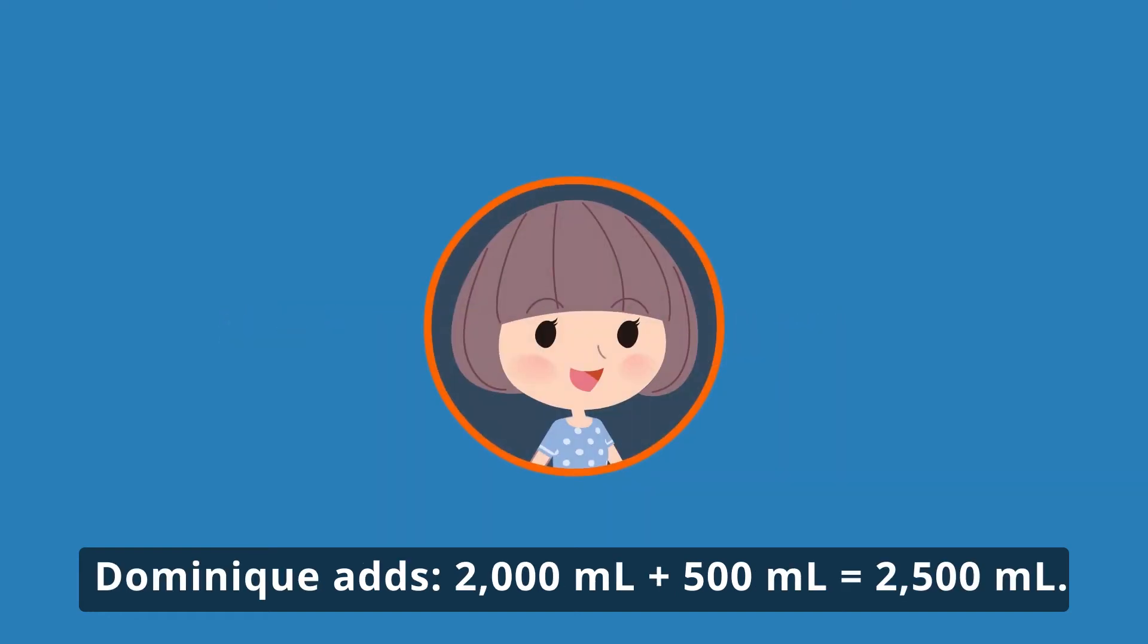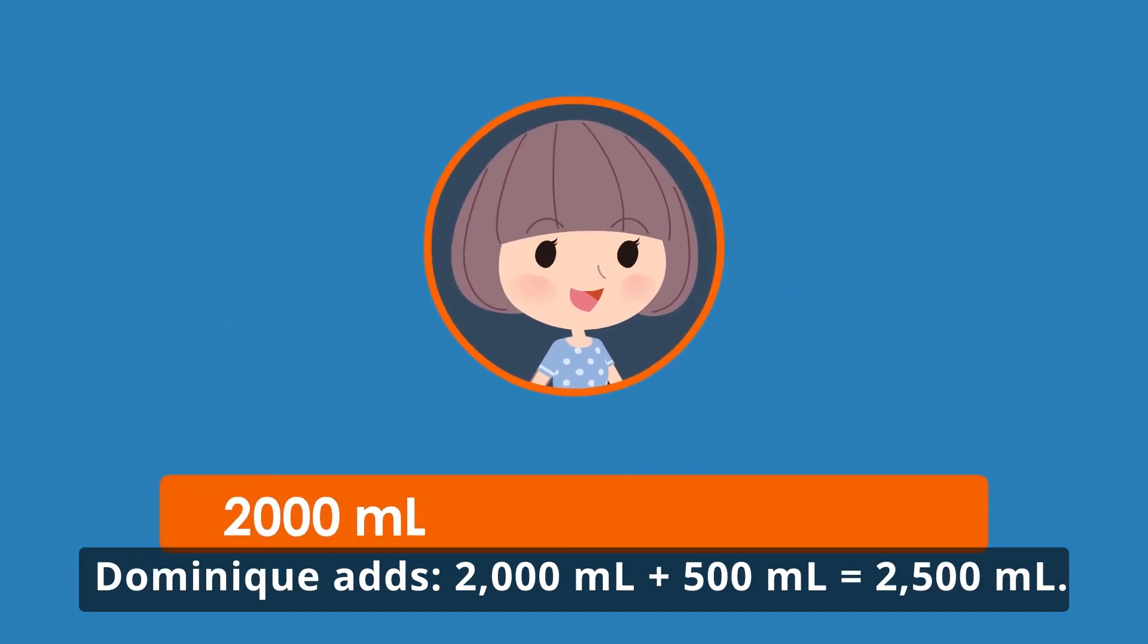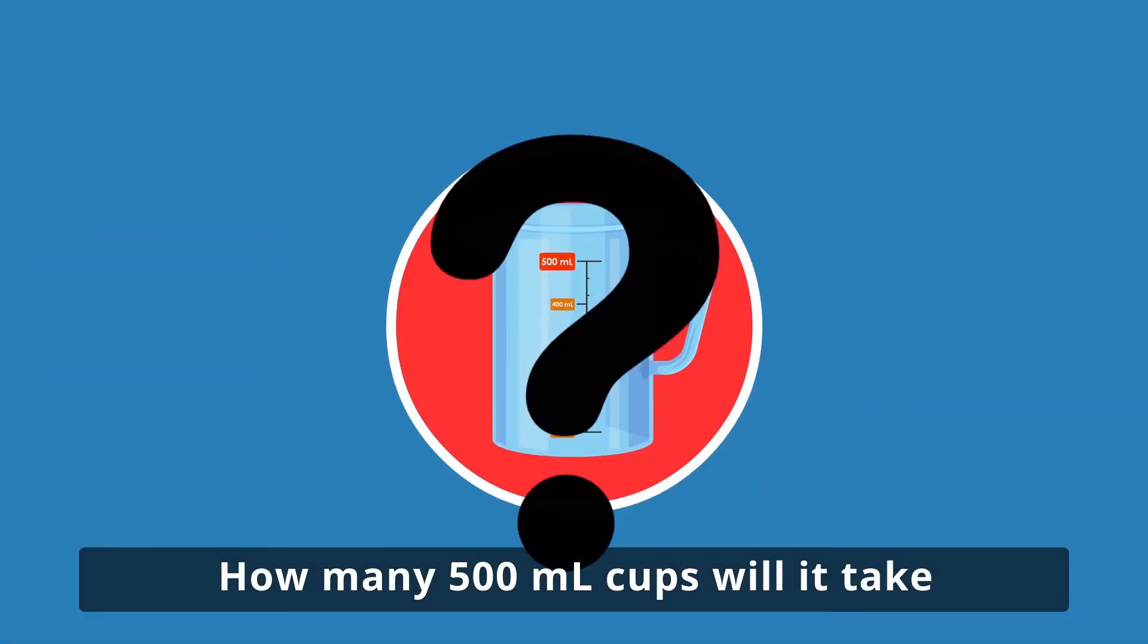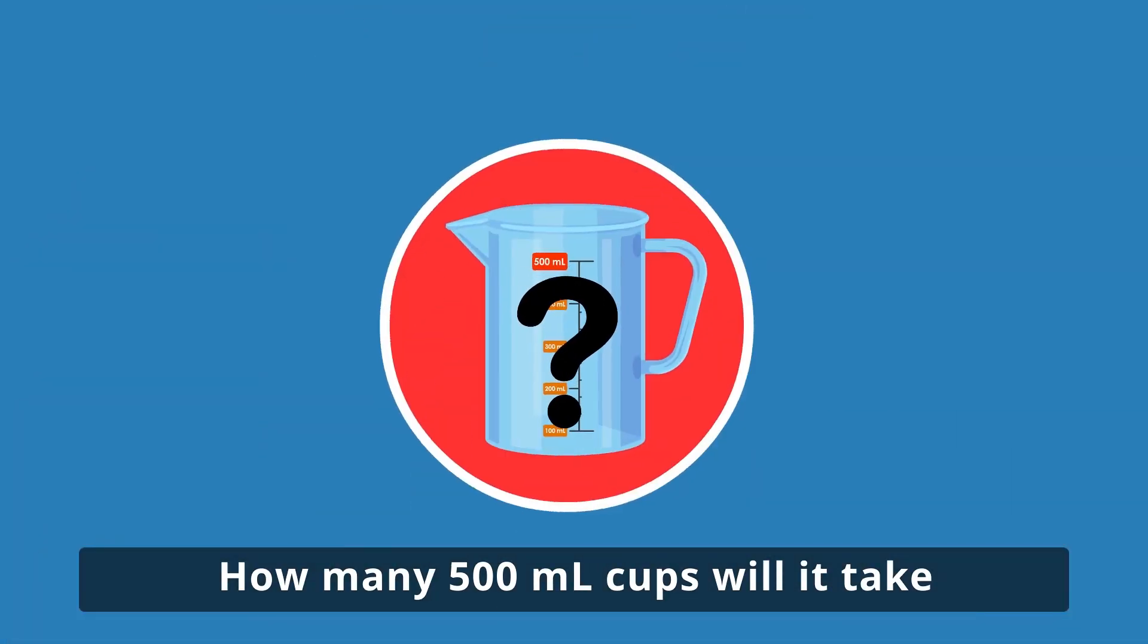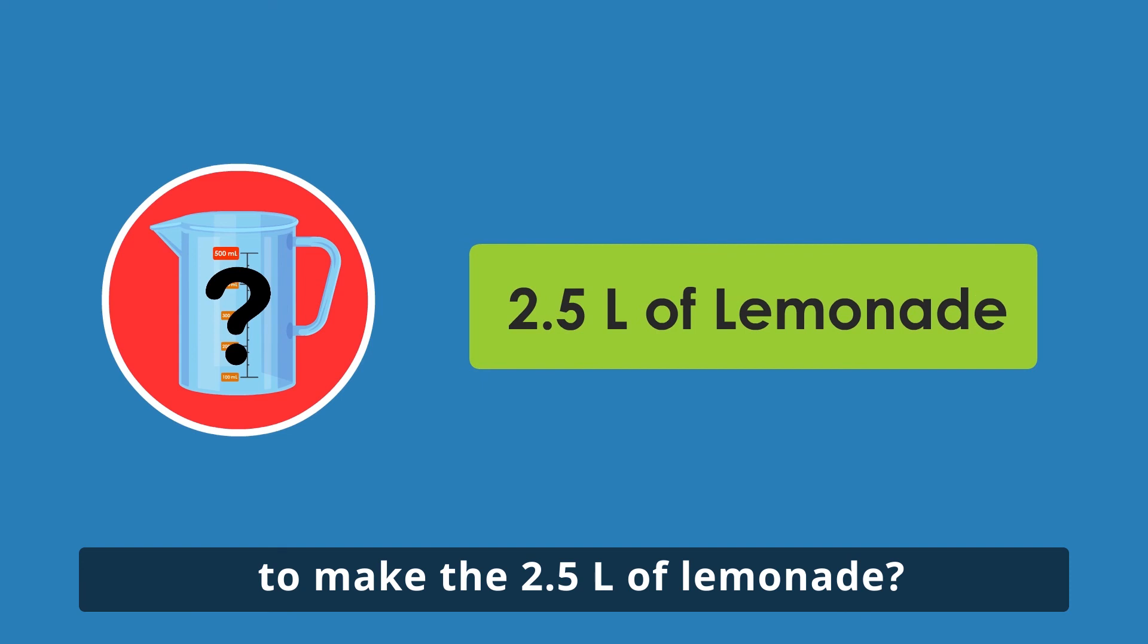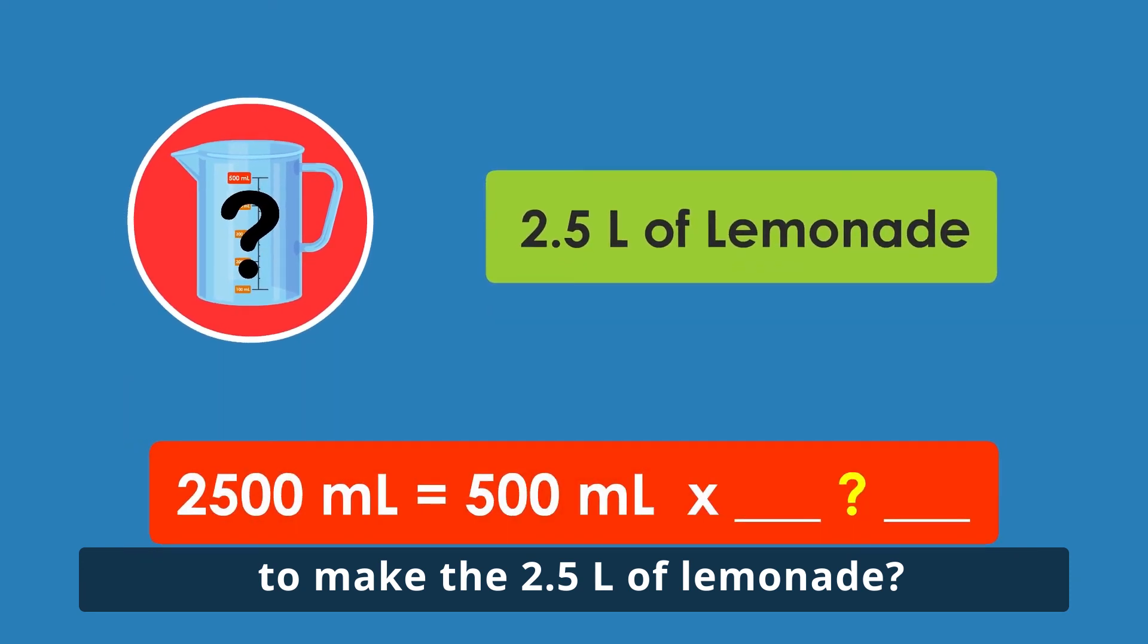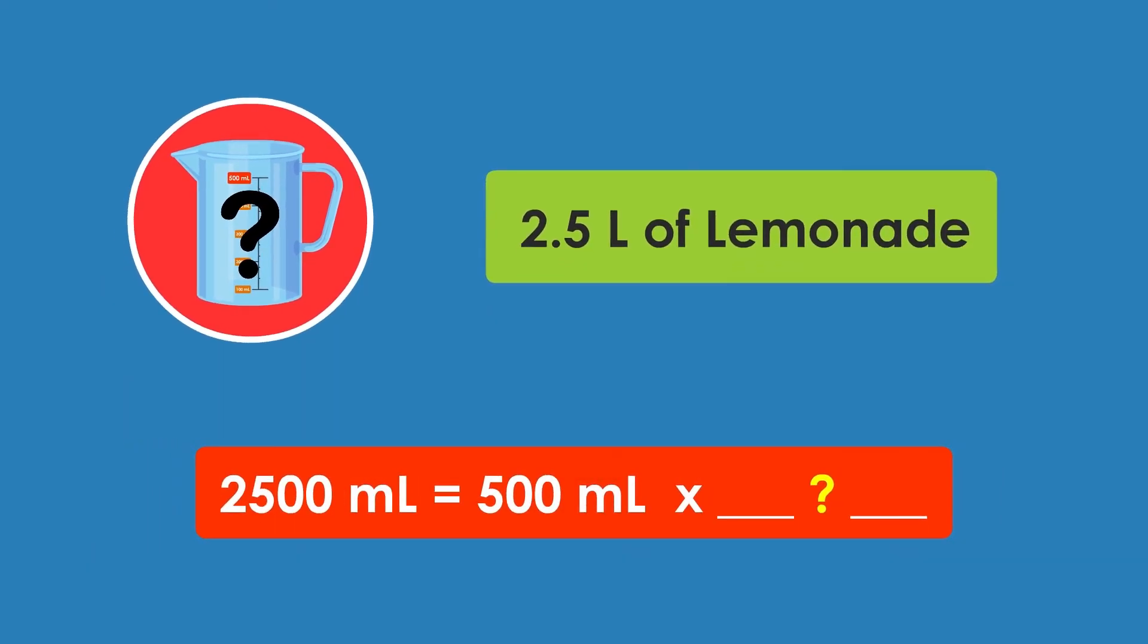Dominique adds 2,000 milliliters plus 500 milliliters equals 2,500 milliliters. How many 500 milliliter cups will it take to make the 2.5 liters of lemonade?